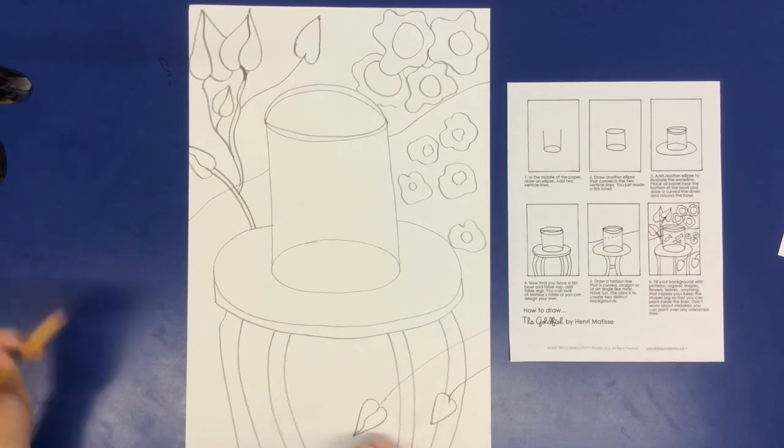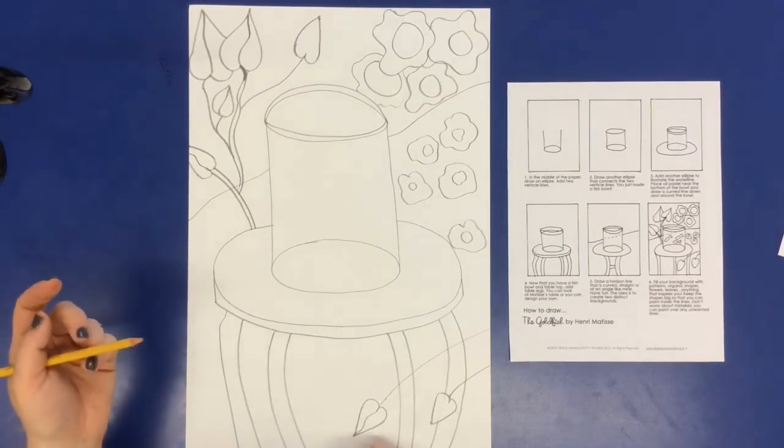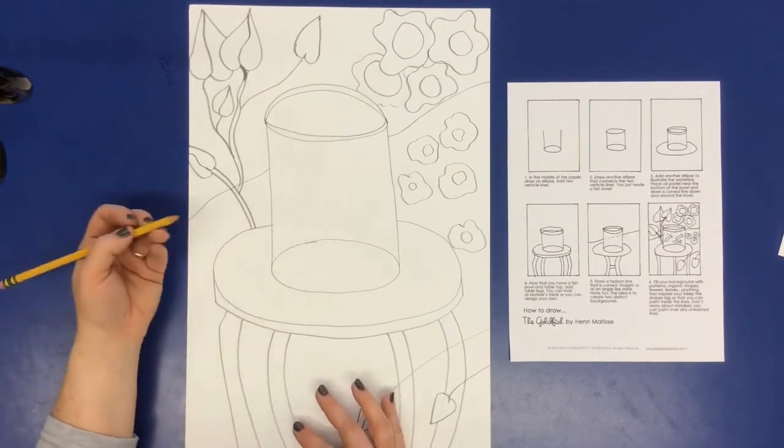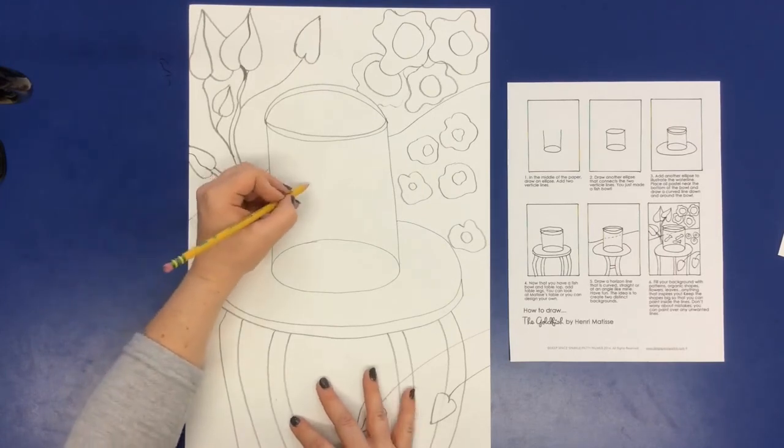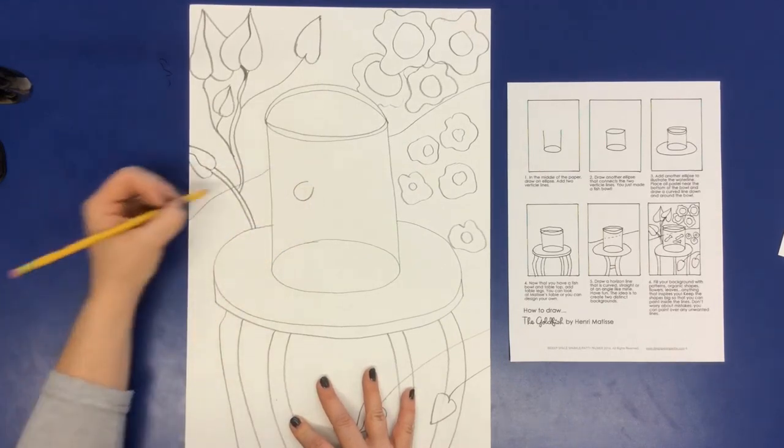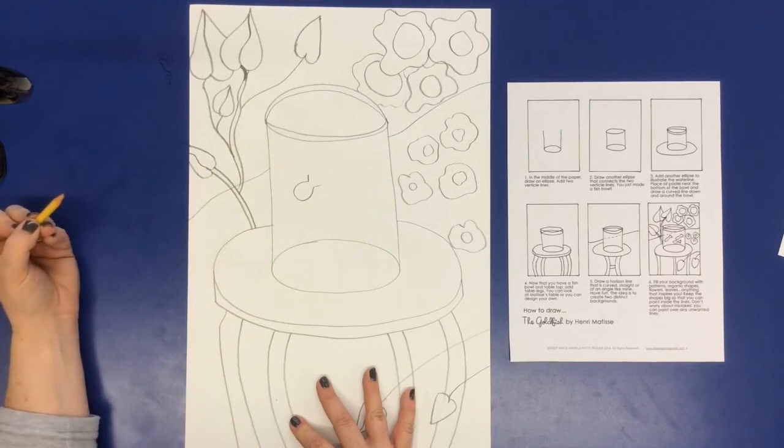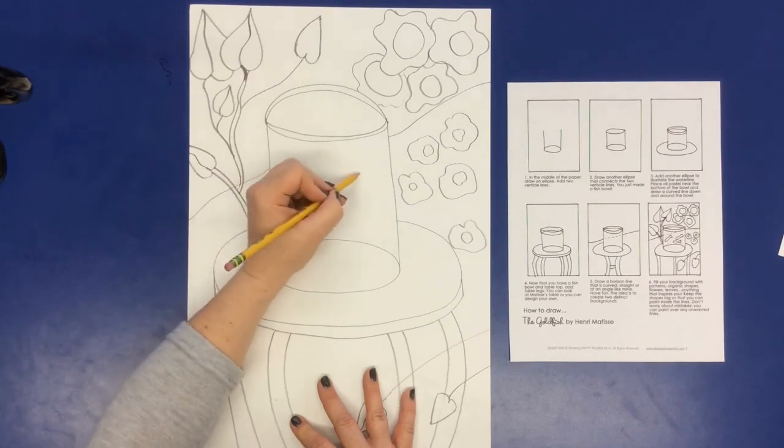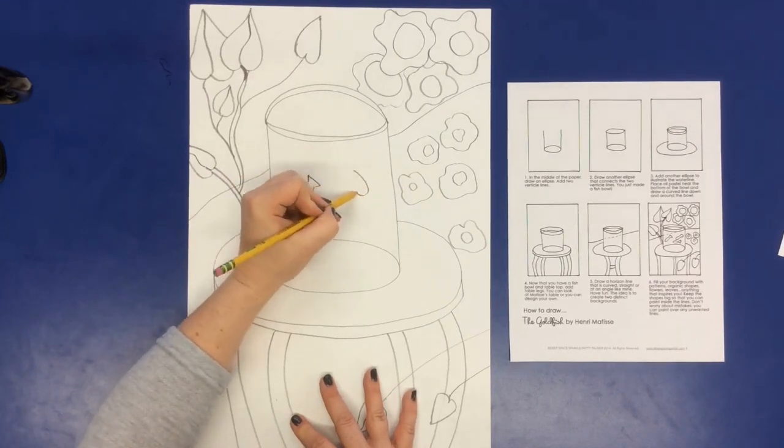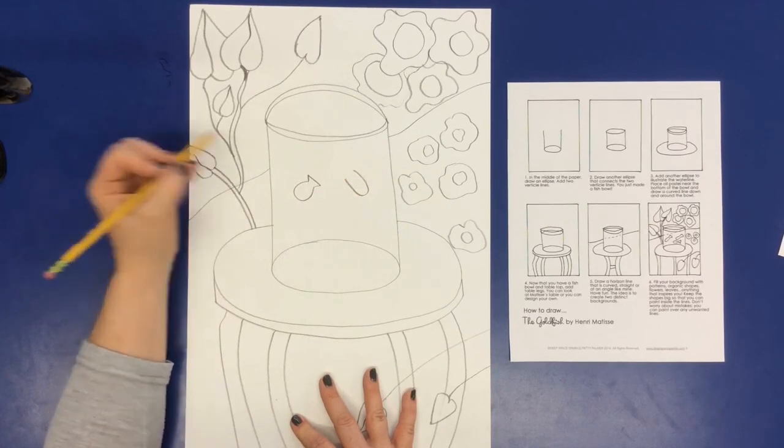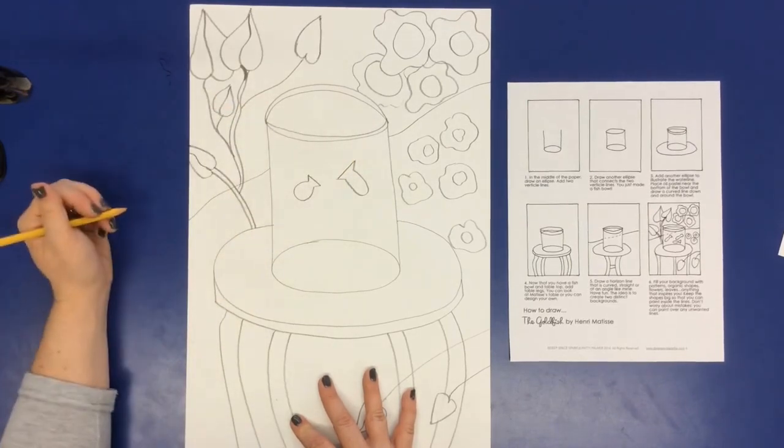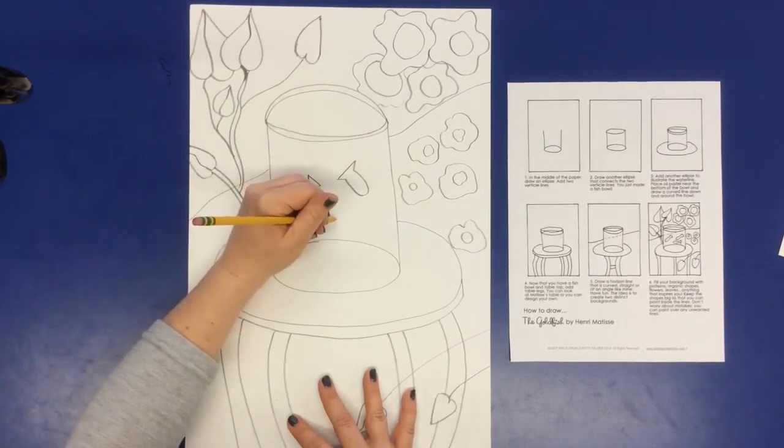Now the last thing that we're going to do is we're going to add in our fish. So you could draw a fish any way that you want, but I know for me, it's easier. I just kind of start with this curve, and then I do two lines coming off of them, and then I connect it. So you can make a really long kind of a backward C if you want, or you do your lines and connect it. So make as many as you want. They could be big or small.